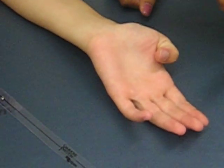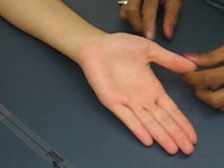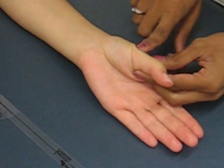Can you please do this motion for me? Good. The axis of rotation is going to be the metacarpophalangeal joint, which is right here.